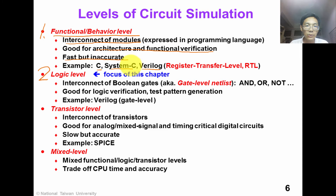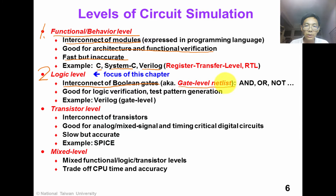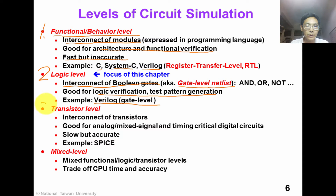C simulation, SystemC simulation, and Verilog RTL level simulation belong to the functional level category. The second level is logic level simulation, which is also the focus of this chapter. In this simulation, circuits are represented as interconnects of boolean gates — also called gate level analysis. This is good for logic verification and test pattern generation. Gate level Verilog simulation belongs to this category.